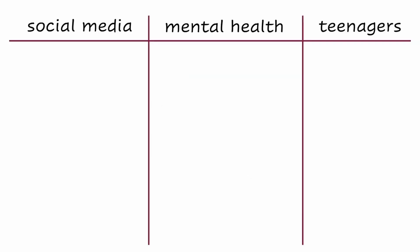The three keywords we identified from our original research question are a great starting point, but what if the scholars who research and write about social media, mental health, and teenagers use slightly different keywords? What if instead of 'social media,' they write about 'social networking'? We want to be prepared to switch out keywords if we aren't getting enough relevant results, so we need to think of synonyms or similar terms, broader terms, or narrower terms for each of the unique concepts of our research question. For example, we've already identified 'social networking' as a similar term for social media, but we might also want to think of narrower terms — for example, particular social media platforms.